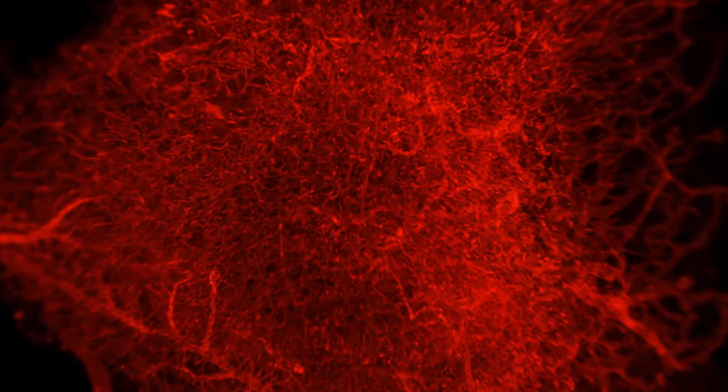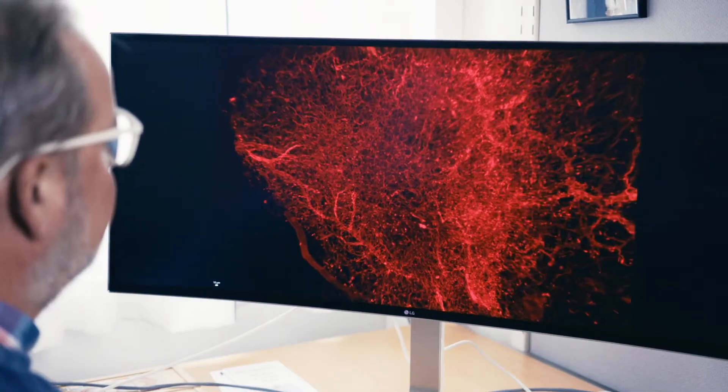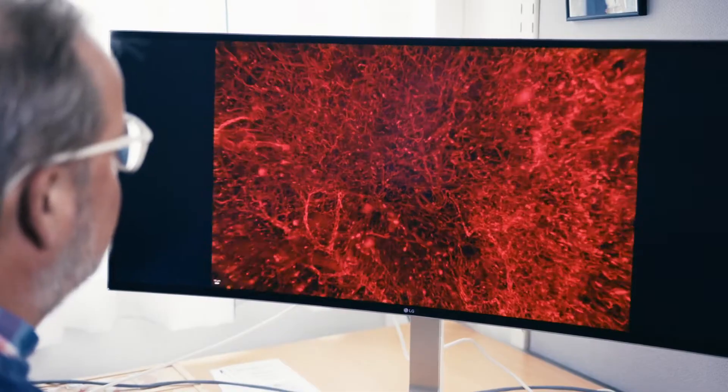Here we see in red the fine and delicate network of blood vessels. This is a normal breast from a young woman. It is very well structured and there is an order here between the smaller and larger blood vessels.